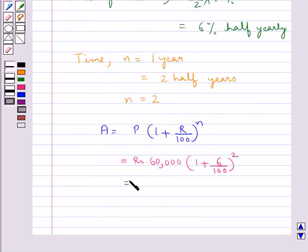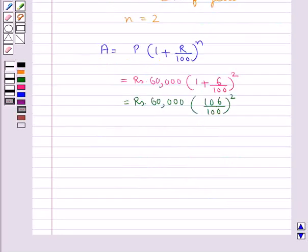Now, this is again equal to Rs. 60,000 multiplied by 106 multiplied by 106 total upon 100 multiplied by 100.